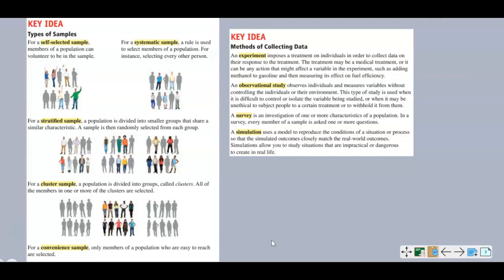Here is your key idea — a nice visual representation to help you remember. Self-selected: you can see the ones raising their hand; they are volunteering and choosing to be part of the sample. Systematic: you can see every other one is highlighted, so there's some kind of rule that makes that happen. Stratified: a population is divided into smaller groups, and a sample is randomly selected from each group. For example, people in the cafeteria or the library — choosing everybody in the library would be a convenience sample.